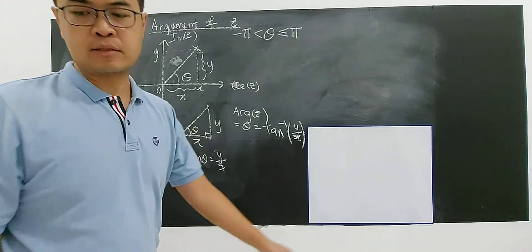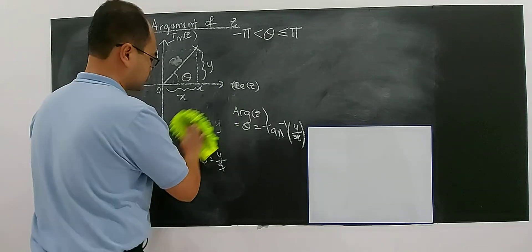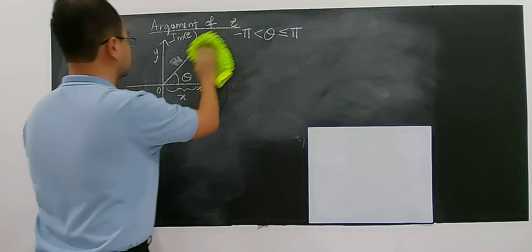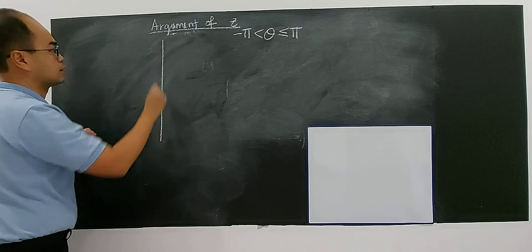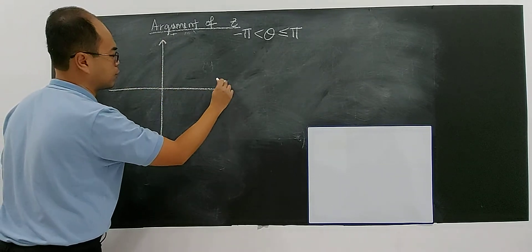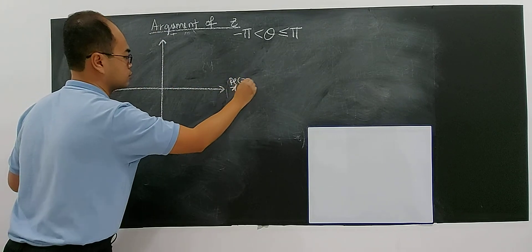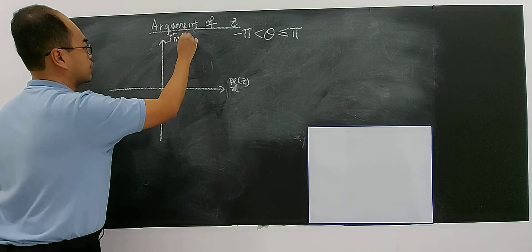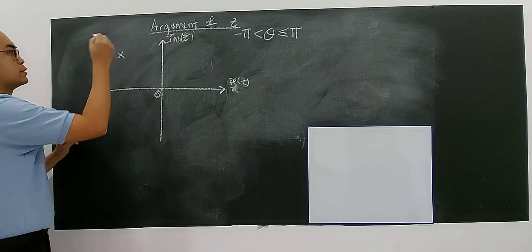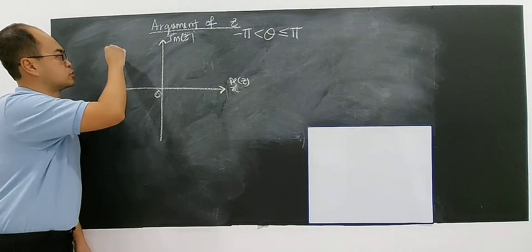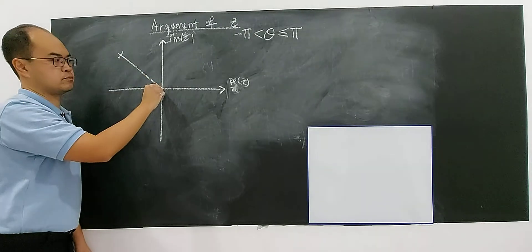And this is how you find the argument for the first quadrant — very simple. Now let's look at what the argument is if the coordinates of the complex number fall in the second quadrant. I will teach you one by one before you memorize the formula. I have to draw from that coordinate to the origin.